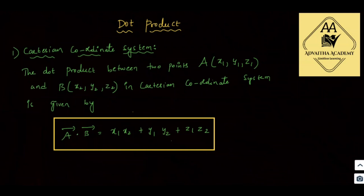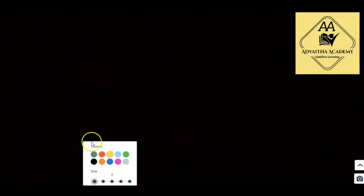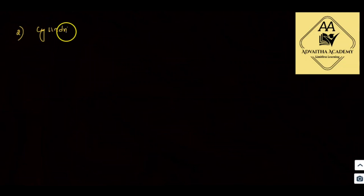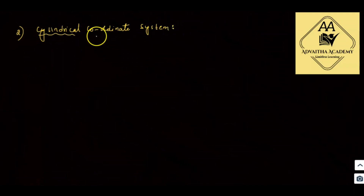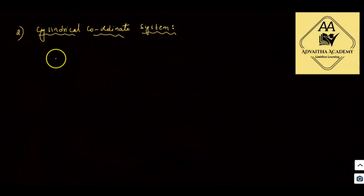Already with this property, I will proceed to the next coordinate system. The second one is the cylindrical coordinate system. For the cylindrical coordinate system, the dot product formula is given by: